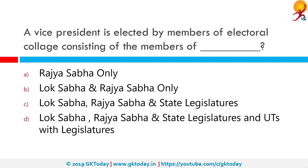A vice president is elected by members of an Electoral College consisting of the members of Lok Sabha and Rajya Sabha both. The vice president is elected indirectly by the members of an Electoral College consisting of members of both houses of Parliament in accordance with the system of proportional representation by means of the single transferable vote, and the voting is by secret ballot conducted by the Election Commission.